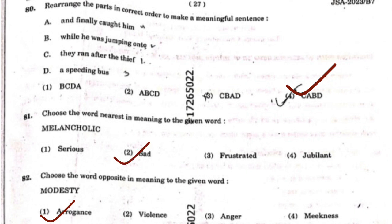Question 82: Choose the word opposite in meaning to 'modesty.' First, you should know that modesty means being down-to-earth, not boasting about yourself. The opposite meaning would be arrogance — being arrogant or egoistic. So the first answer, arrogance, is correct. Modesty is an important word — remember it for future exams as it appears repeatedly. I have covered it in my vocabulary playlist that discusses PGT English questions.